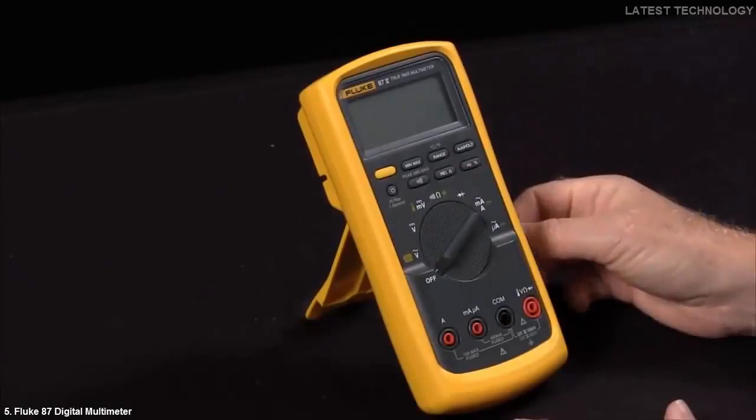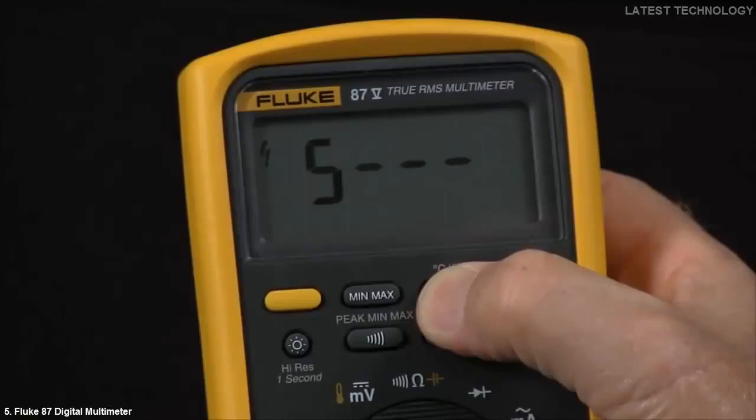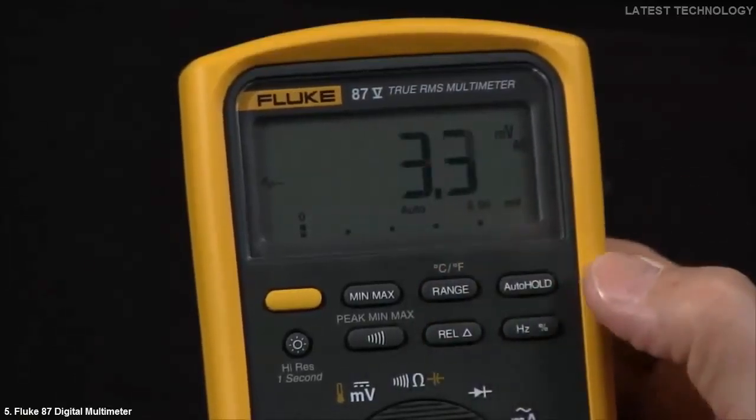Another function that you can enable is smoothing by holding in the range key and turning it on. This will smooth out the display so you take multiple readings before it actually displays them.